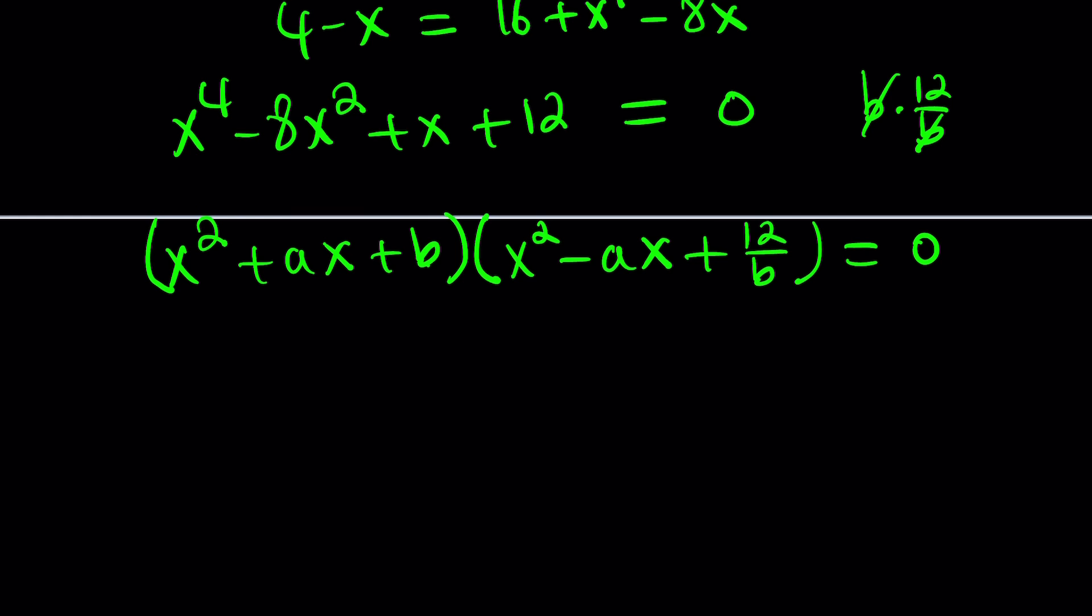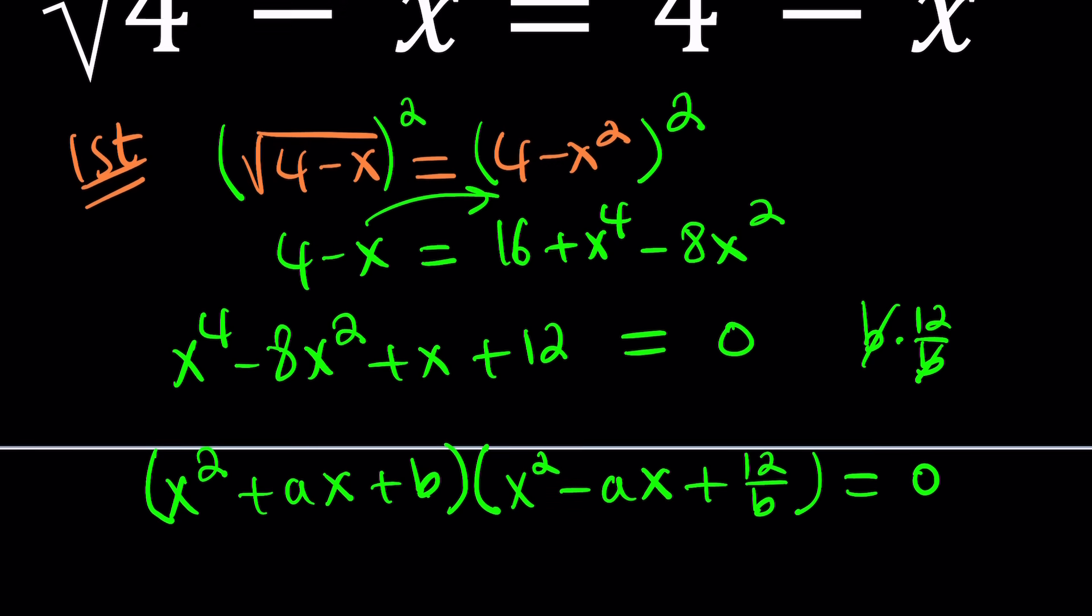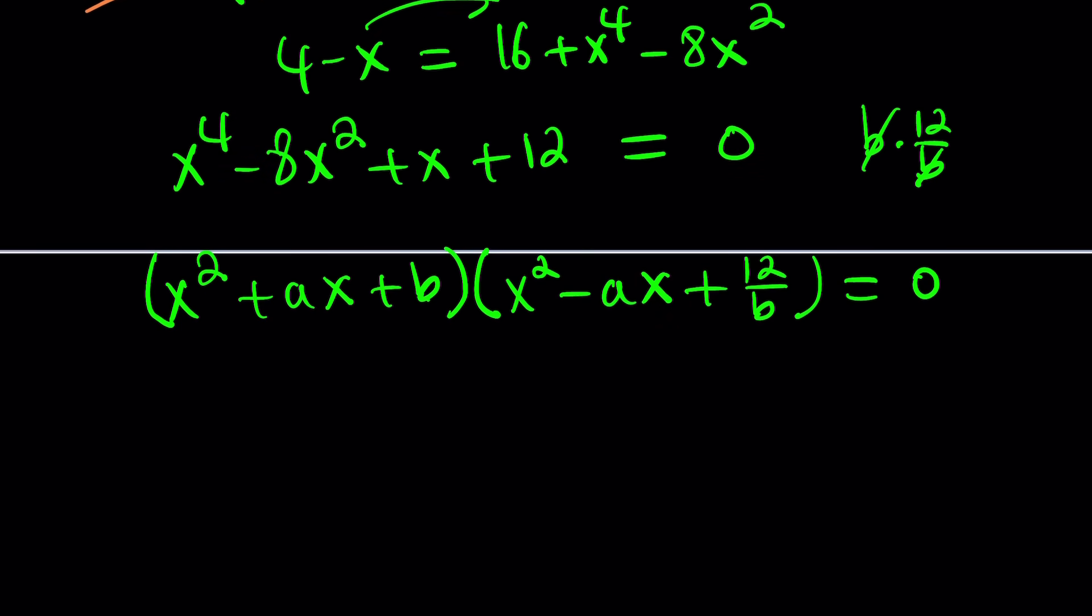Now, this is supposed to equal 0. If you can find the values of a and b, then you get the factor. And from there, you can just solve the quadratics. But how do you find the values of a and b?